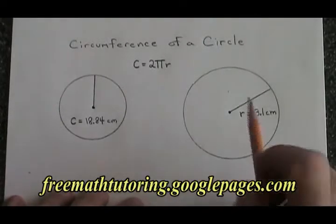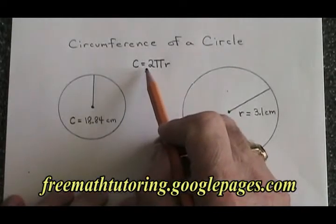The formula for the circumference of a circle is c equals 2 pi r.